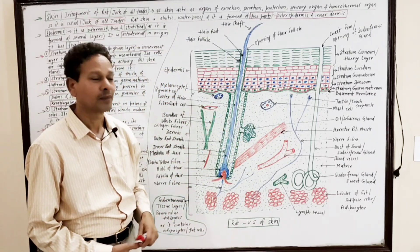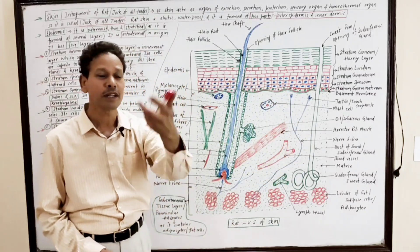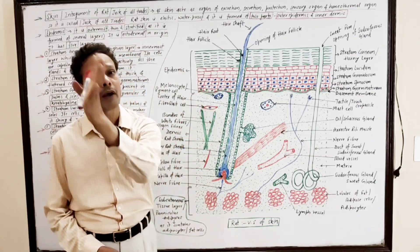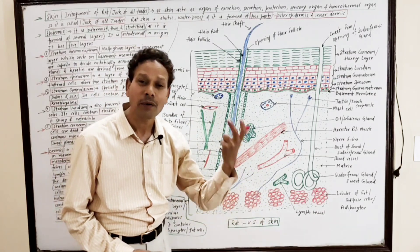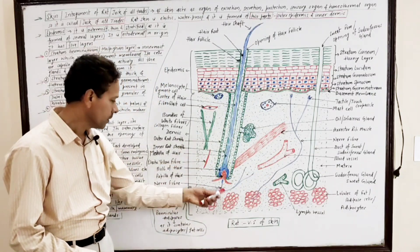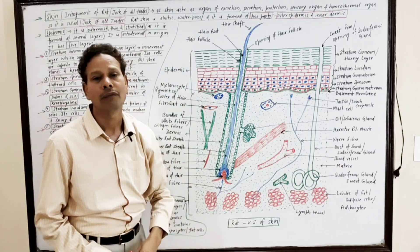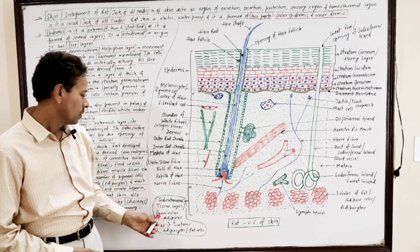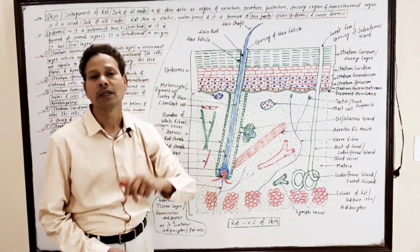Another cell in the dermis is the fibroblast. As the name indicates, fibroblasts are fiber-forming cells involved in the formation of white fibers and yellow fibers. Another type of cell is the adipocyte — fat-storing cells. Just below the dermis, the subcutaneous tissue consists of lobules of fat or adipocytes, and this layer is named paniculus adiposus.